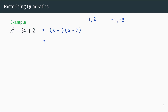We can check by expanding: x times x is x squared, x times negative two is negative two x, negative one times x is negative x, and negative one times negative two is plus two. This simplifies to x squared minus three x plus two, which equals our original expression.